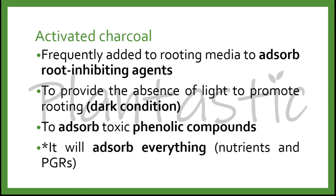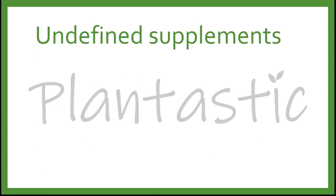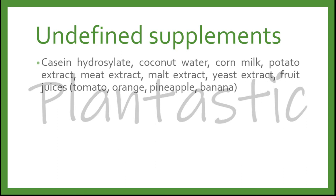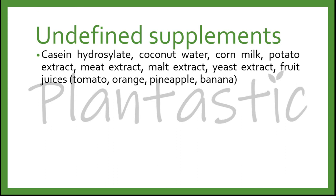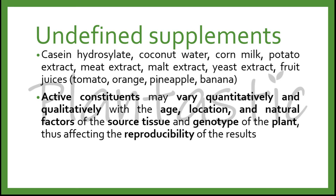However, activated charcoal will absorb everything inside the media, including nutrients and plant growth regulators. We can also add undefined supplements, for example casein hydrolysate, coconut water, corn milk, potato extract, meat extract, malt extract, yeast extract, and fruit juices such as tomato, orange, pineapple, and banana. However, the active constituents may vary quantitatively and qualitatively with the age, location of the samples, natural factors, source tissue, and genotypes of the plant, thus affecting the reproducibility of the results — meaning that every time you add these undefined supplements, the results will vary from time to time.